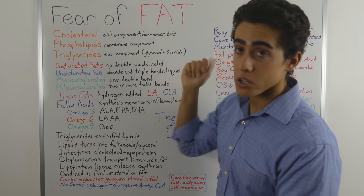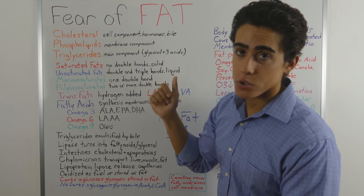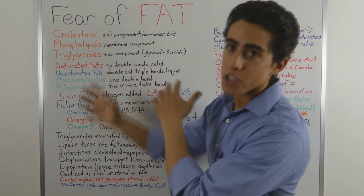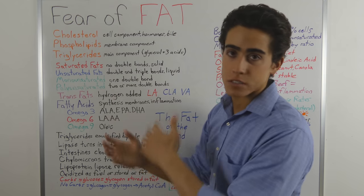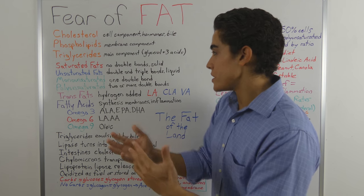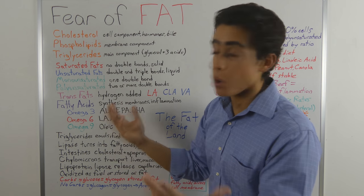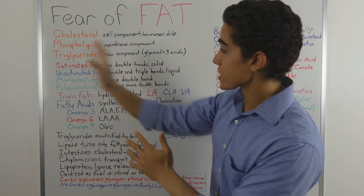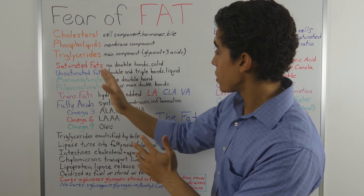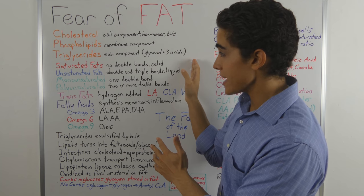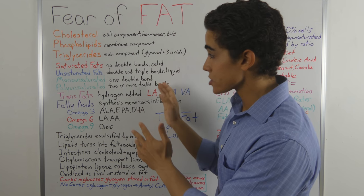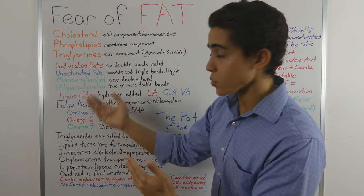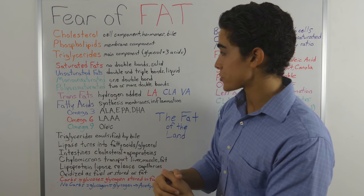Triglycerides are a glycerol molecule bound to three fatty acid molecules, and there are dozens and dozens of types of fatty acids. It's important to note that triglycerides are composed of glycerol and fatty acids, and triglycerides compose every single fat there is, whether it's saturated or monounsaturated.